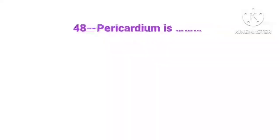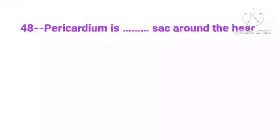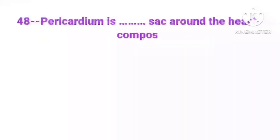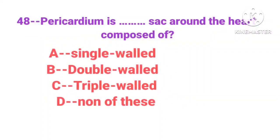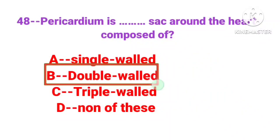Question number 48: Pericardium is a dash sac around the heart, composed of. Correct answer is option B, double walled.